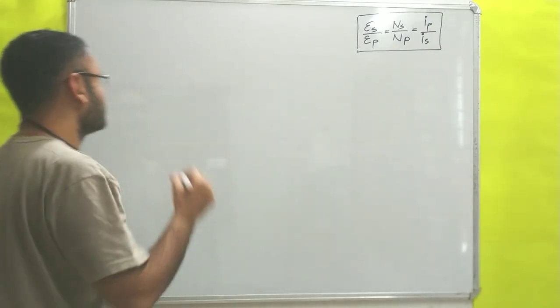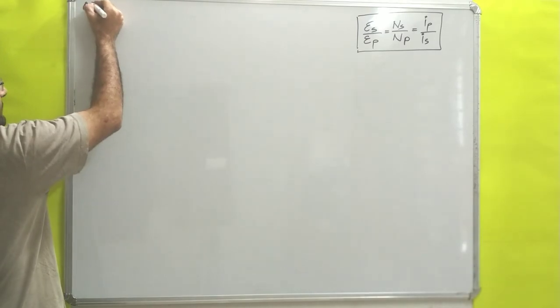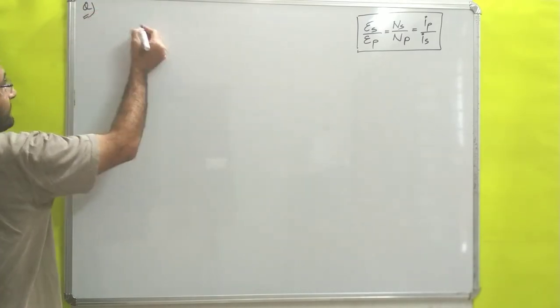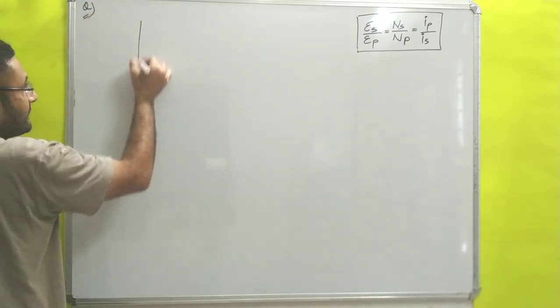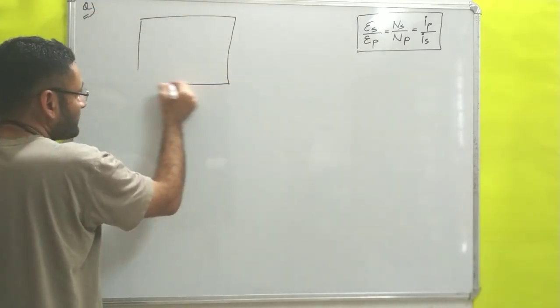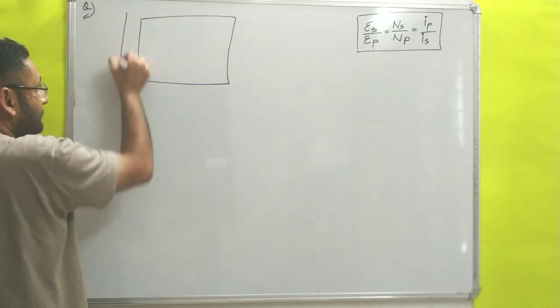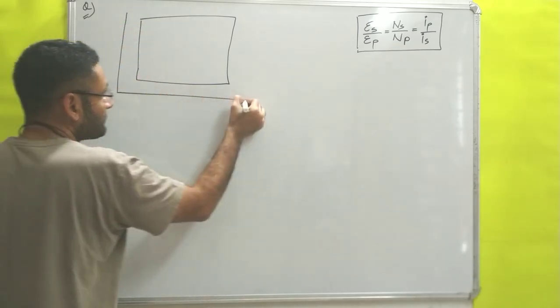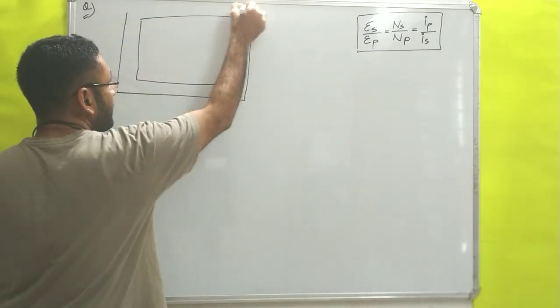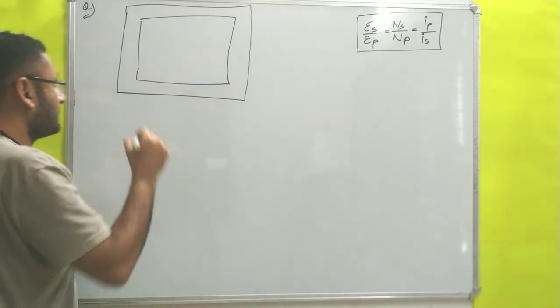In the numerical, first we will discuss what is given. The core of the transformer is given, which is made with ferromagnetic material — soft iron.